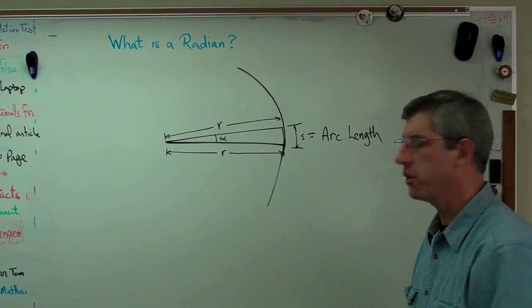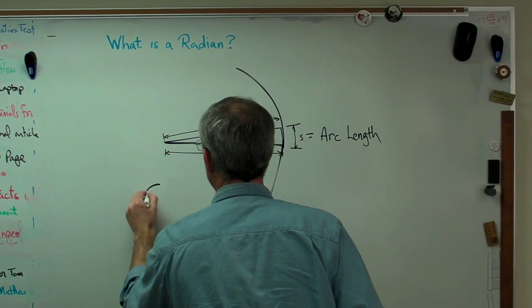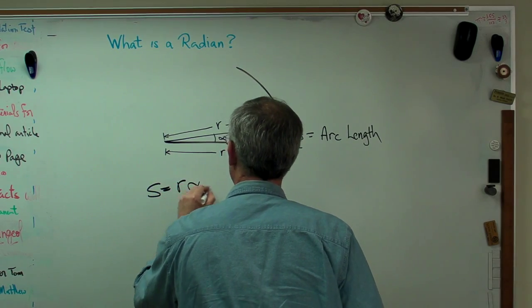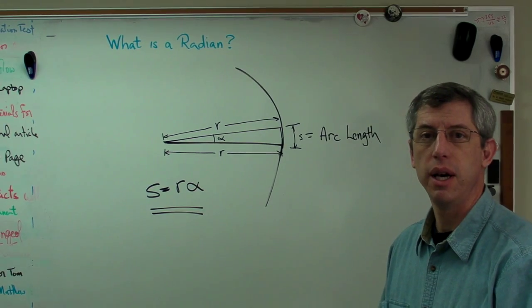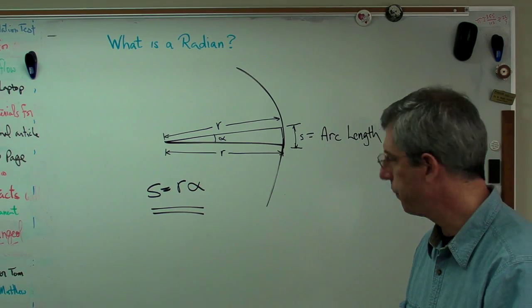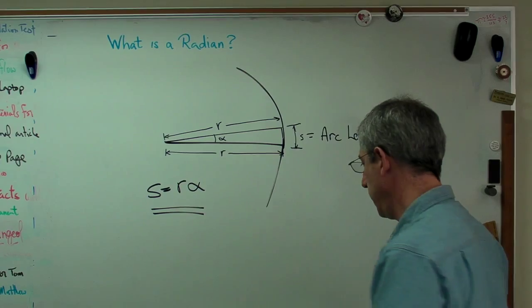All right, most of us learned early on that the arc length is defined that way, where r is a distance and alpha is some angle. So far so good. Let's make that arc length, or that angle, bigger.